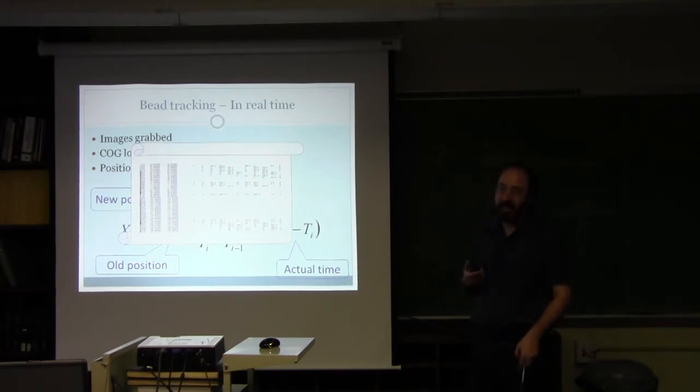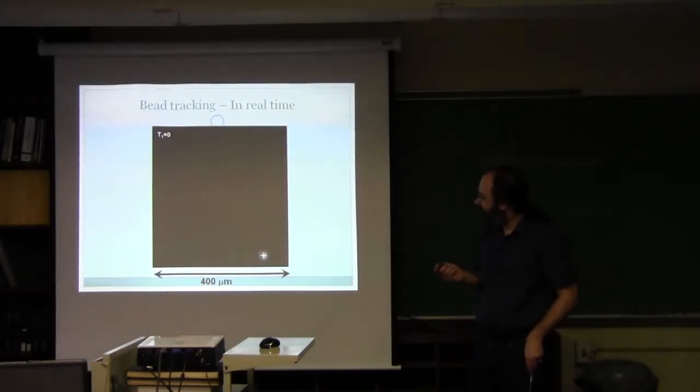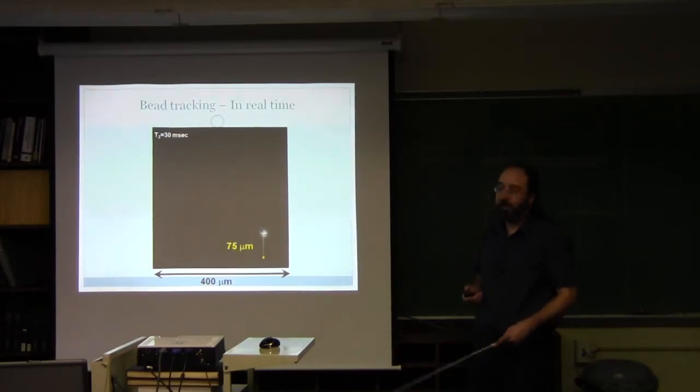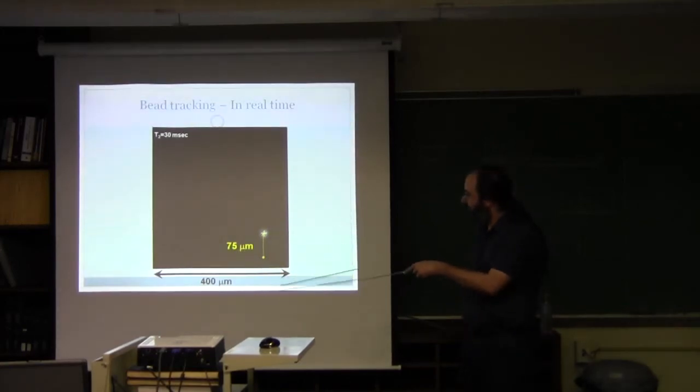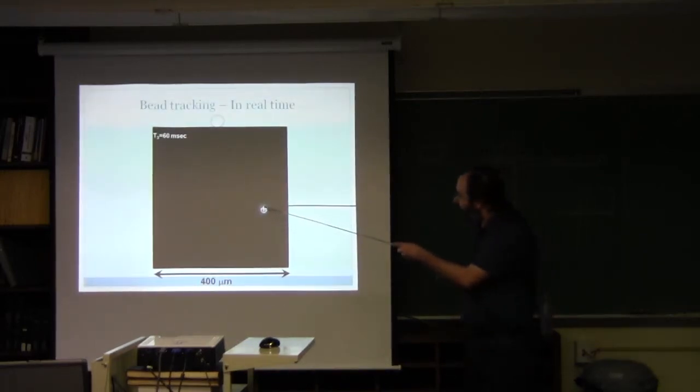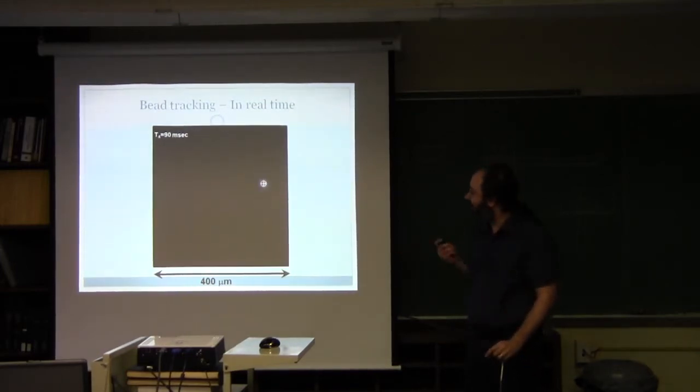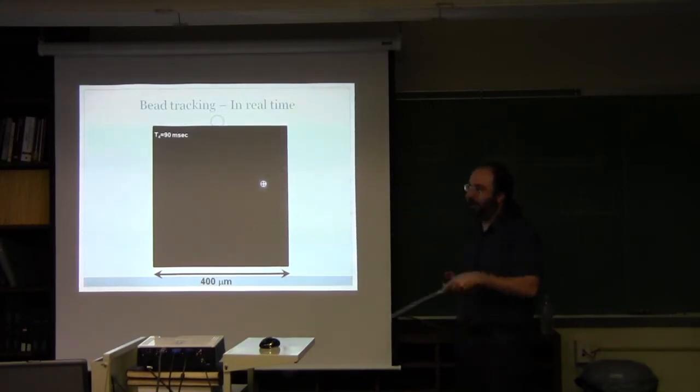You want to make sure that you're not irradiating the same cell more than once. What we have here is a picture of a fluorescent bead taken at time zero. The next picture taken 30 milliseconds later, the bead has moved 75 microns. Another 30 milliseconds later, the cross represents the actual position of the bead, the circle represents the predicted position. This just gets better and better as you're acquiring more images.